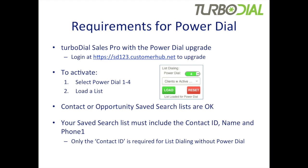What are the requirements for using PowerDial? First of all, this is an upgrade on TurboDial Sales Pro. You can log into your management account to do the upgrade. To activate it in TurboDial, you simply use the PowerDial selector to select any number between 1 and 4, then choose a list in your list dialing selector and click Load. Either contact or opportunity saved search lists are fine. But you must set up your saved search list to include the contact ID, the name, and the phone. In a normal list dialing scenario, you only need the contact ID, but with PowerDial you also need the name and the phone.